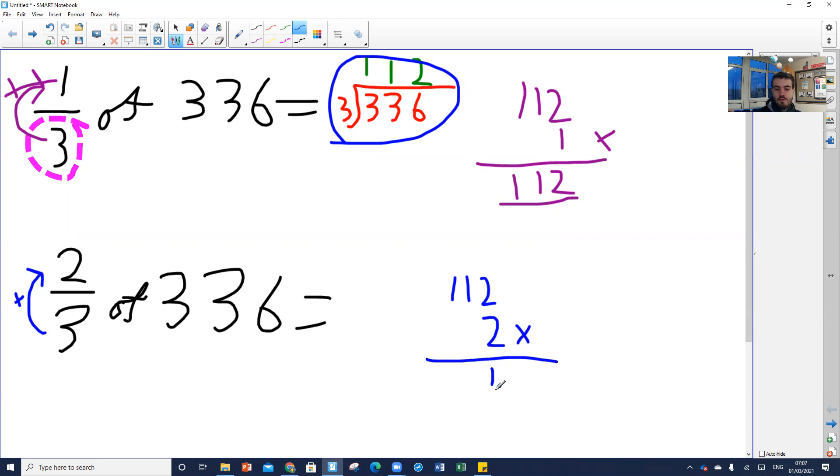So this time we've got 2 times 2 is 4, 2 times 1 is 2, 2 times 1 is 2. Our answer is 224.